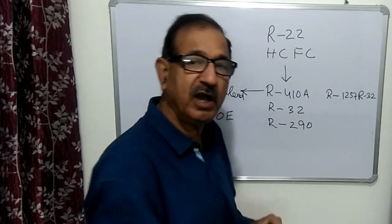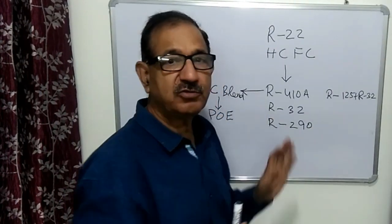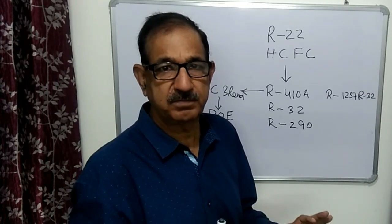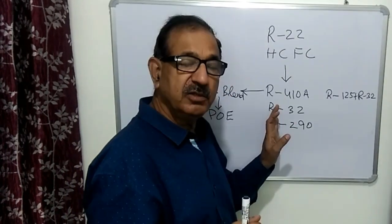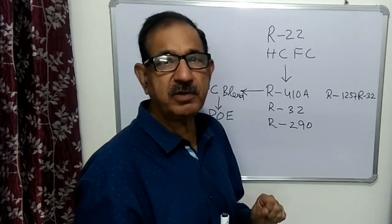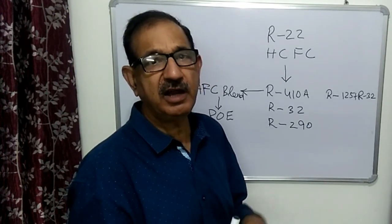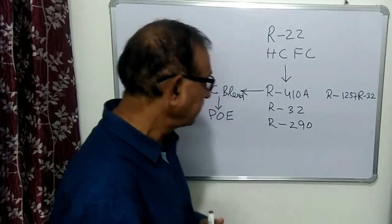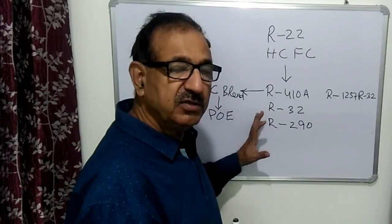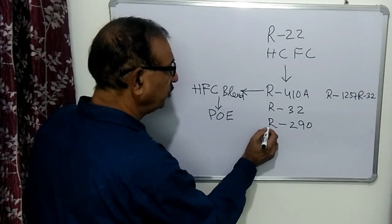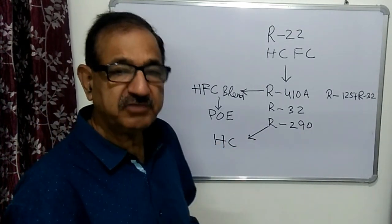For R32, it is also a very high-pressure refrigerant like R410A, and it is also a mildly flammable refrigerant, so we have to take care of flammability issues. Similarly, we must use only the recommended gauge manifold, which has a low-side gauge of 500 psig and a high-side gauge of 800 psig.